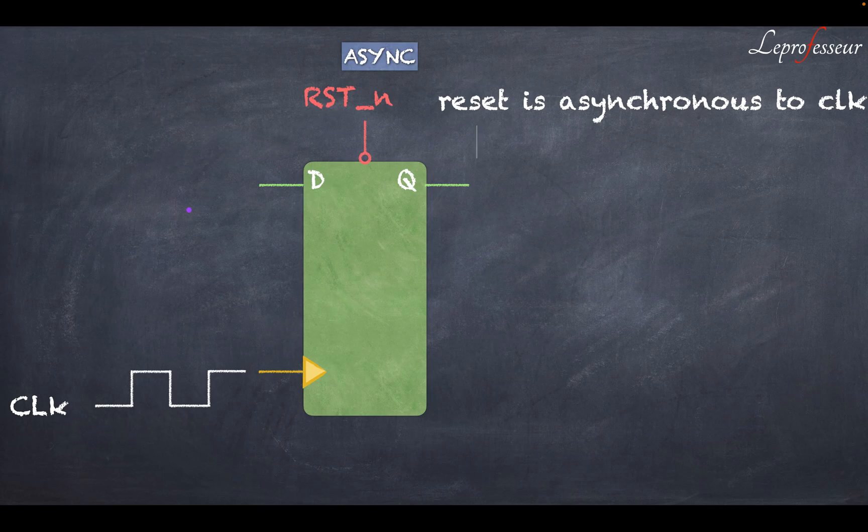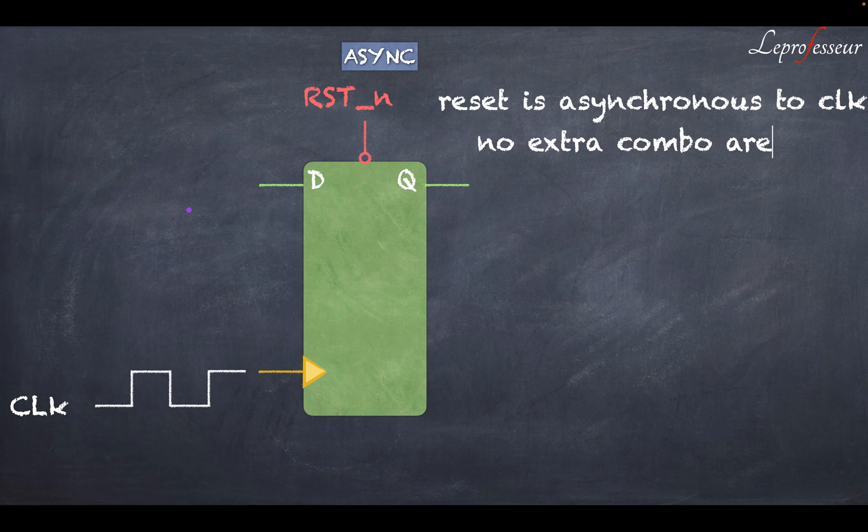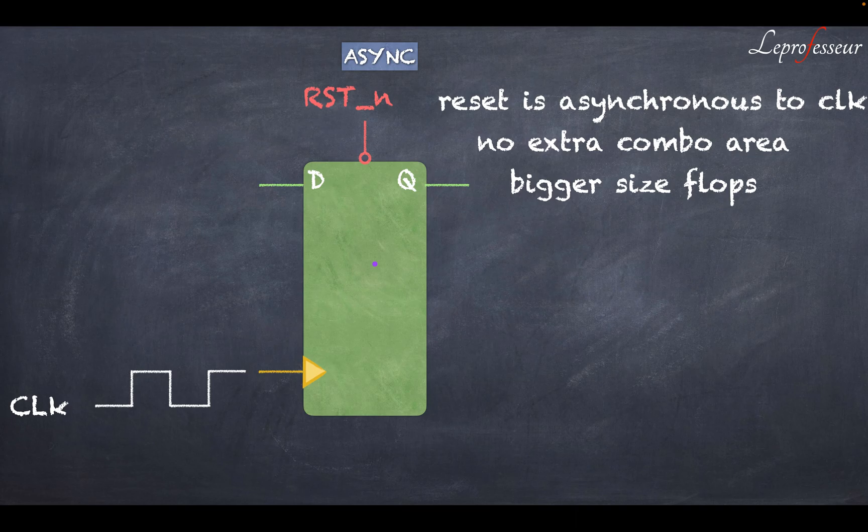Reset is asynchronous to the clock. No extra combinatorial logic, so we save a lot of area. Now there's a little bit extra area of this style of the flip-flop because the cell design needs to make sure that when the asynchronous reset comes, this particular flip-flop or all the flops where the reset is going get to a known state.